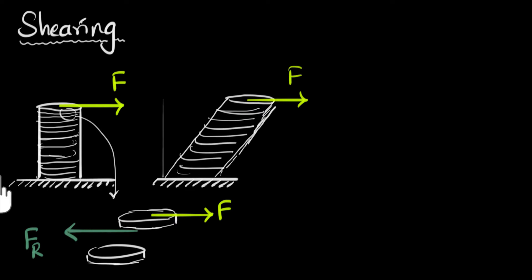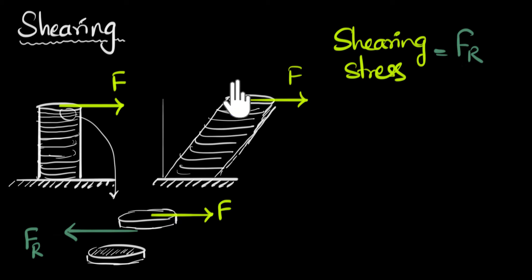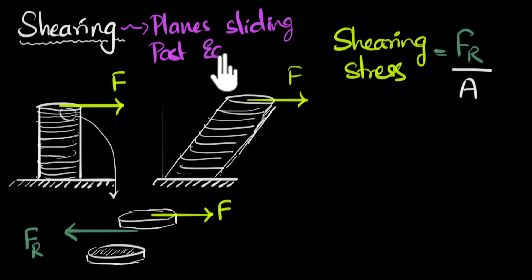If we take this restoring force and divide it by this cross-sectional area, then we will call that kind of stress. Remember, stress is the restoring force per unit area. So that kind of stress is called shearing stress. Shearing stress is this restoring force divided by the cross-sectional area. So what should come to your mind when you hear the word shearing is planes sliding past each other.